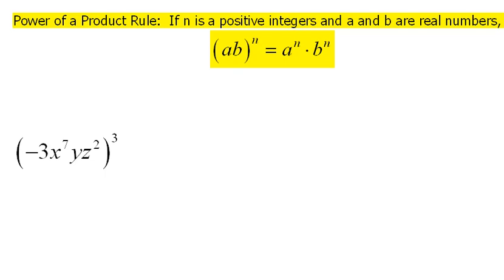Our next rule says power of a product rule. It says if n is a positive integer, oh that should just be integer, and a and b are real numbers, then (ab) raised to the n power would be the same thing as saying a to the n power times b to the n power.